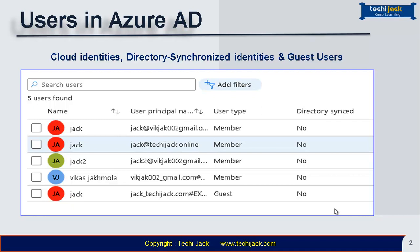In my previous video I created a custom domain by the name of techiejack.online. The user jack@techiejack.online is showing as a member because it was created on Azure AD. The user techjack@techiejack.com lies in an external domain, so it is an invited user showing as a guest. There is no user synchronized with on-premises Active Directory, so directory sync shows as 'No' for everyone.